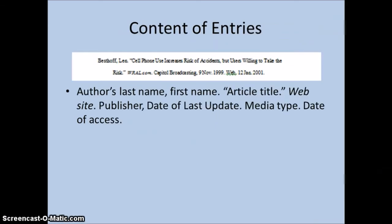Let's take a closer look at one of the entries. The first one starts with the author's last name, comma, first name, period. Then comes the title of the article in quotation marks with a period.